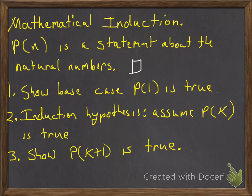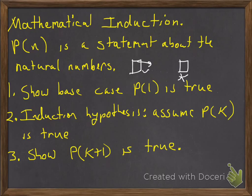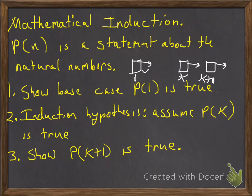The induction hypothesis is: as we go down the line, we get to the kth domino, and we assume that the kth domino falls. We show that the first domino falls. Then we've got to assume that if the kth domino falls, it's got to knock over the next one, k plus 1. If we can show that the k plus 1 falls down also, then we show that the first one gets it going. So that's what our goal is for mathematical induction.